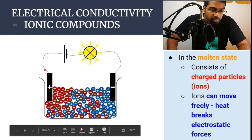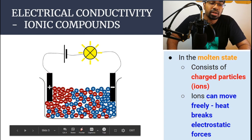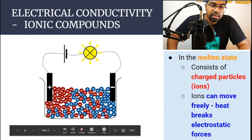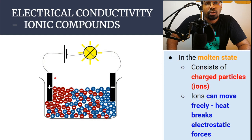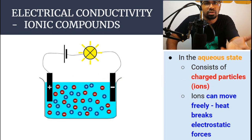Now since the electrostatic force is already overcome, the ions are free to move. When we apply a potential difference across the ionic compound, the anions — the negatively charged particles — are going to move towards the positive terminal, and the cations are going to move towards the negative terminal. There will be a discharge of electrons at the terminals and electrons will flow through the circuit, so ionic compounds in the molten state are able to conduct electricity.